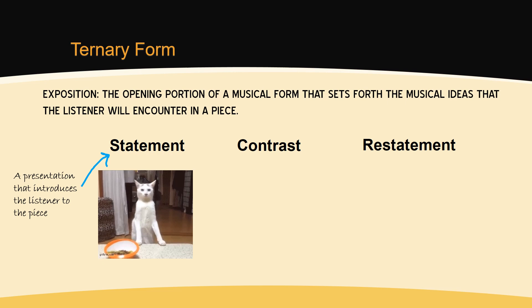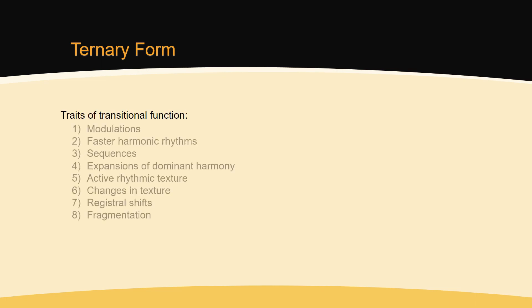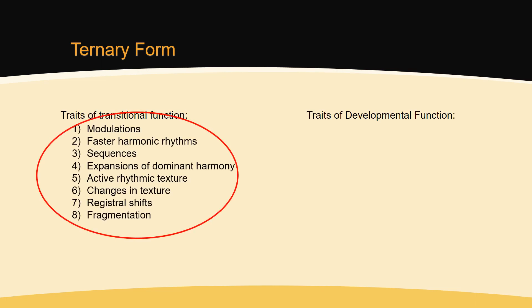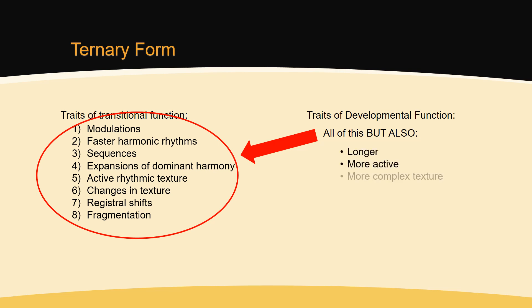In order to create tension and to increase the length of the piece, a section of contrasting material is often employed. This section could have key changes, transitional material, or developmental material. Music that has a developmental function creates instability by manipulating previously heard themes and motives. Developmental function has many of the same characteristics of transitional function discussed in the module on binary form, but tends to be longer and to have more active and more complex texture.